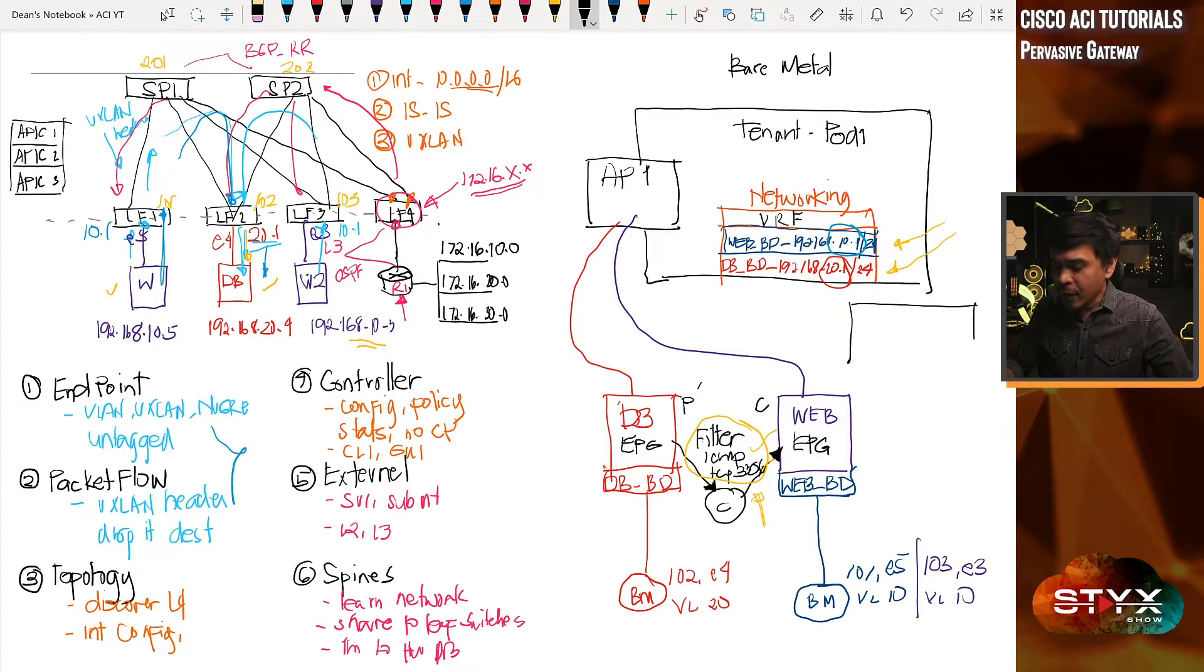Like what I mentioned in the previous video, think about this fabric, the leaf and spine topology, but this time it's much simpler with the use of ACI. Since we already have spines and leaves, and it doesn't matter how many spines and leaves we have here, think about the fabric as one gigantic switch.